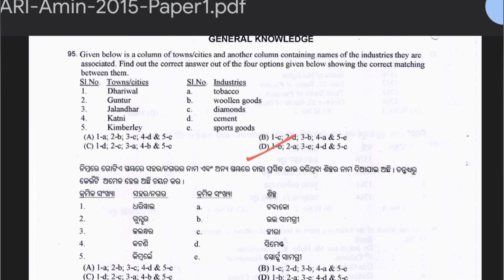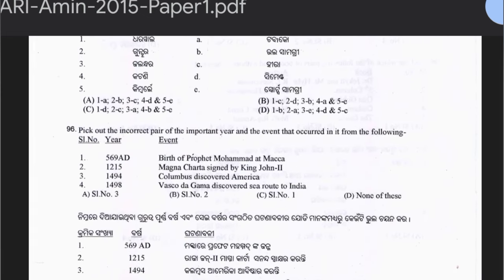Question 96: Year-event matching. 569 AD — Birth of Prophet Muhammad at Makkah; 1215 — Magna Carta signed by King John; 1494 — Columbus discovered America; 1498 — Vasco da Gama discovered sea route to India. The answer is option A — serial number 3 is incorrect, as Columbus discovered America in 1492, not 1494.